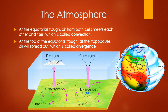At the equatorial trough, the air will heat up and start to rise — that is known as convection — creating an area of low pressure. At the top of the equatorial trough, the air will cool and spread out, which is known as divergence. Convergence is air coming together and divergence is air masses moving apart. Looking at descending air, you see convergence as air comes together higher up.